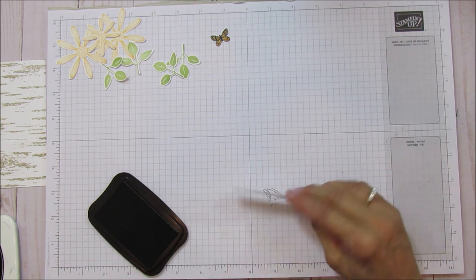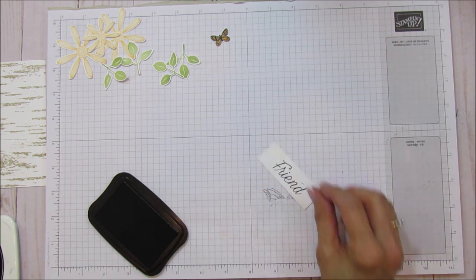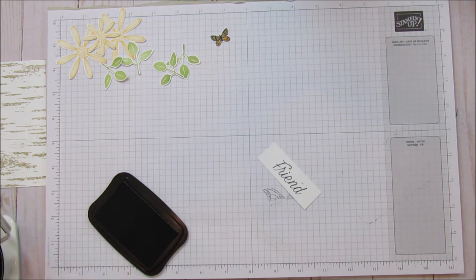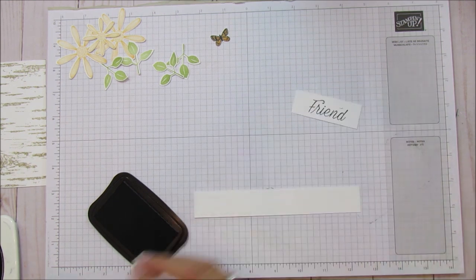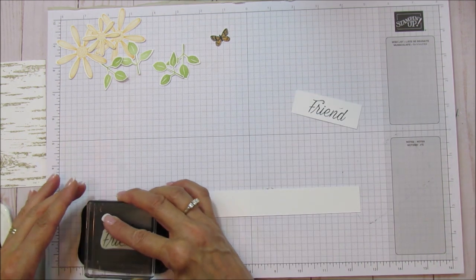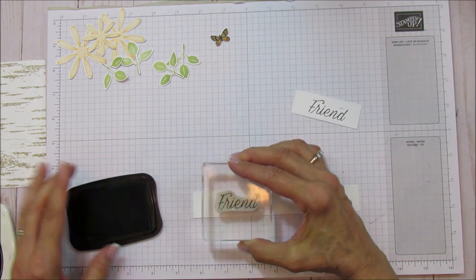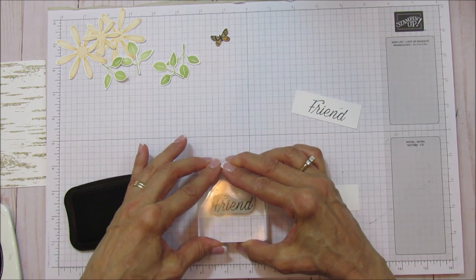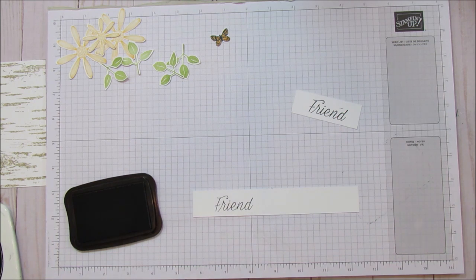Alright, so we have those. And here's our butterfly. And now we just need to stamp our friend. We're going to do that one. I got a little dot. Oh, we can't use that one. Let me go ahead and grab another piece really quick. Alright, that's much better.